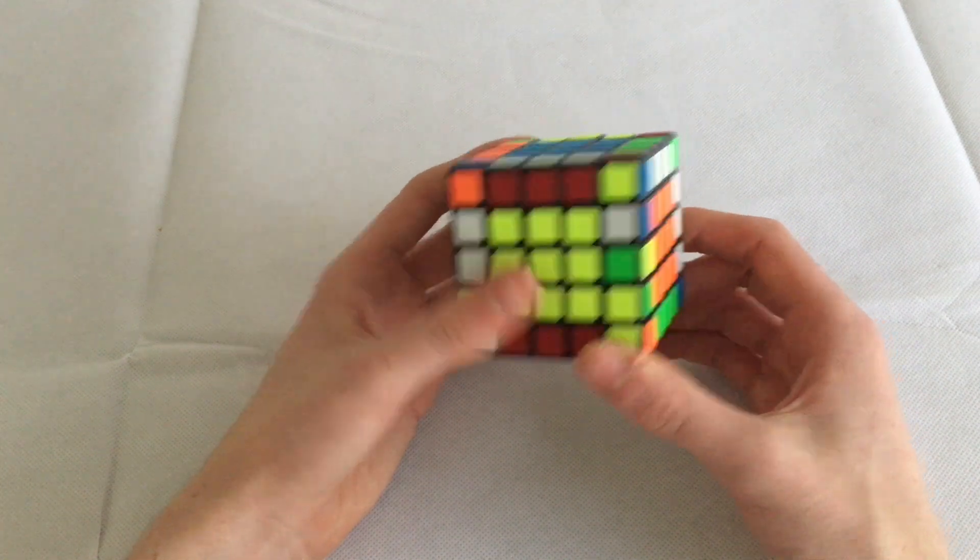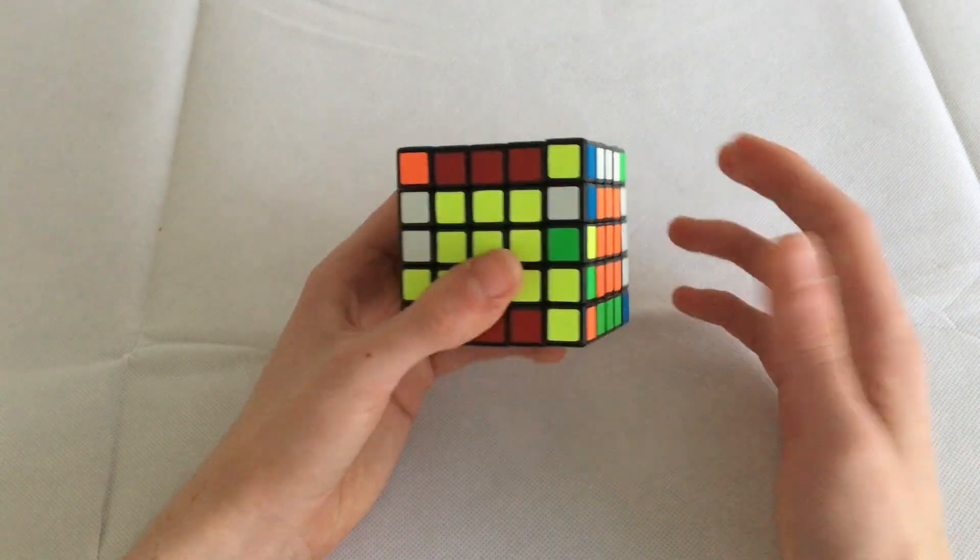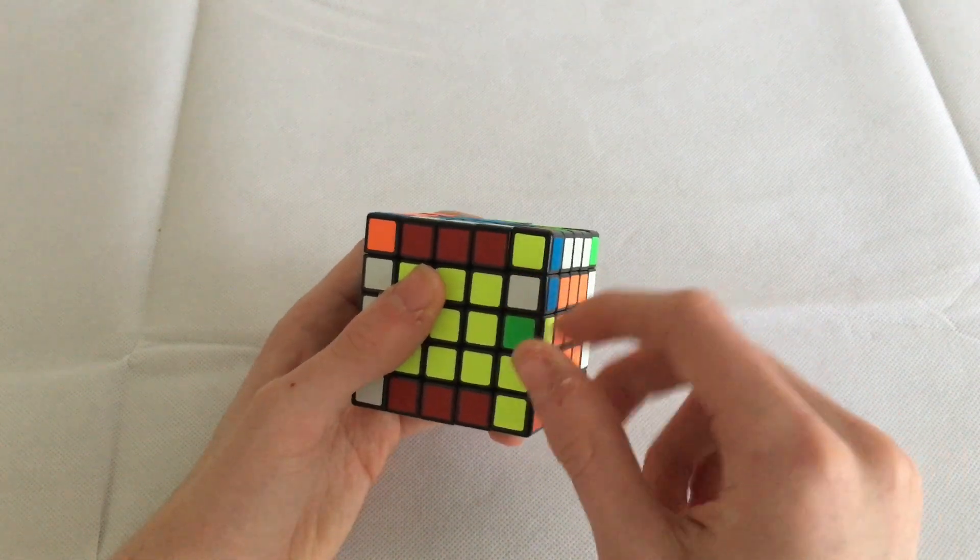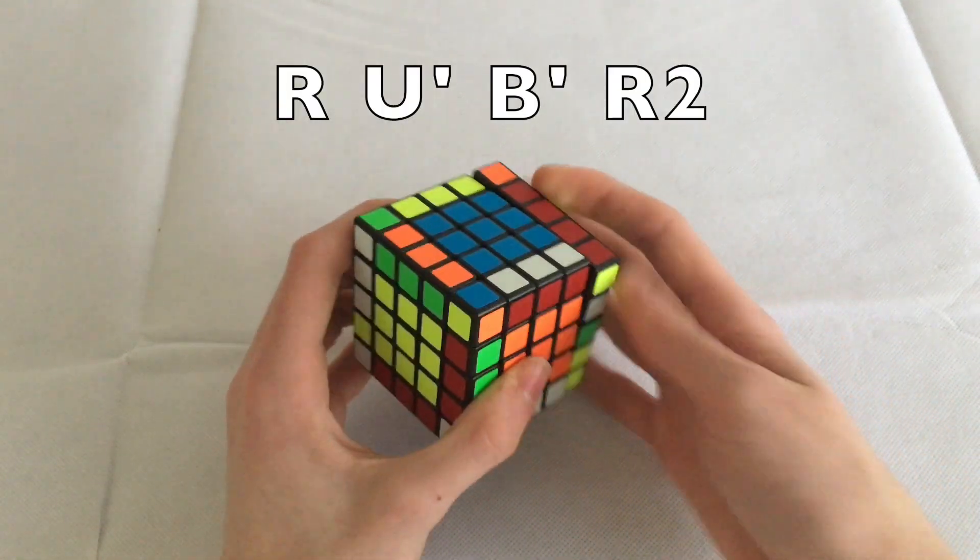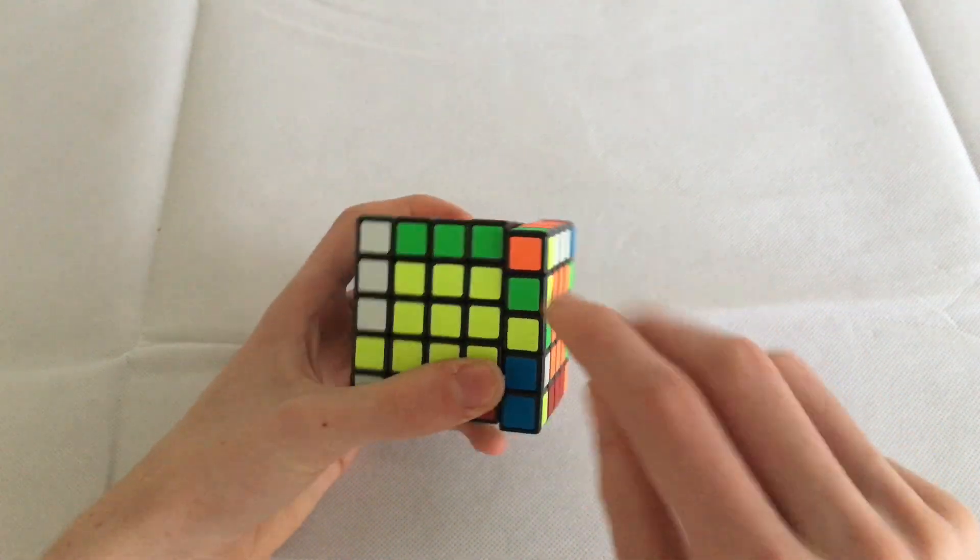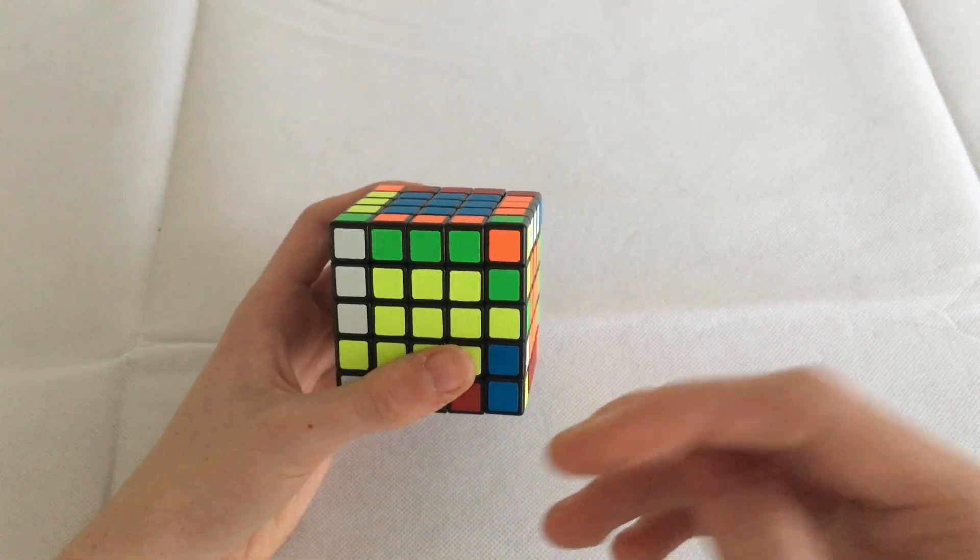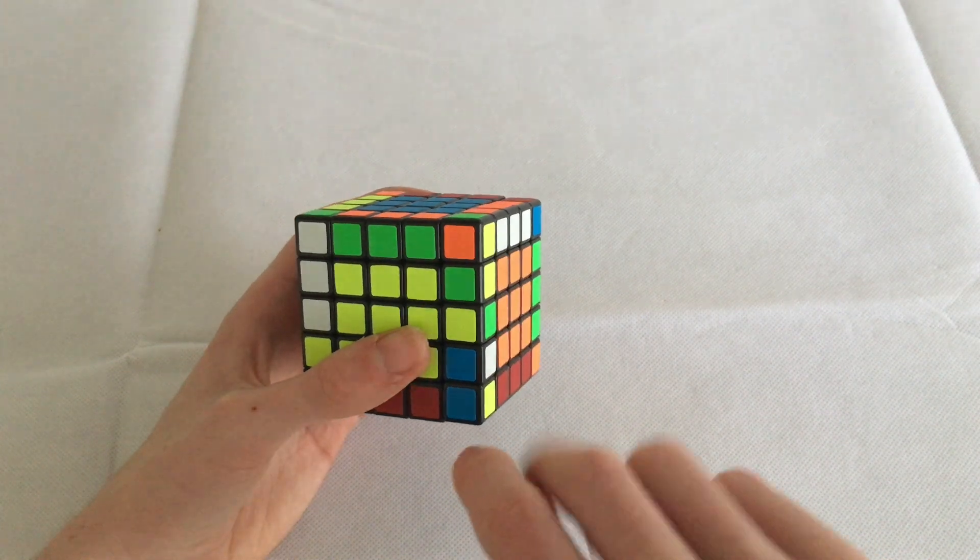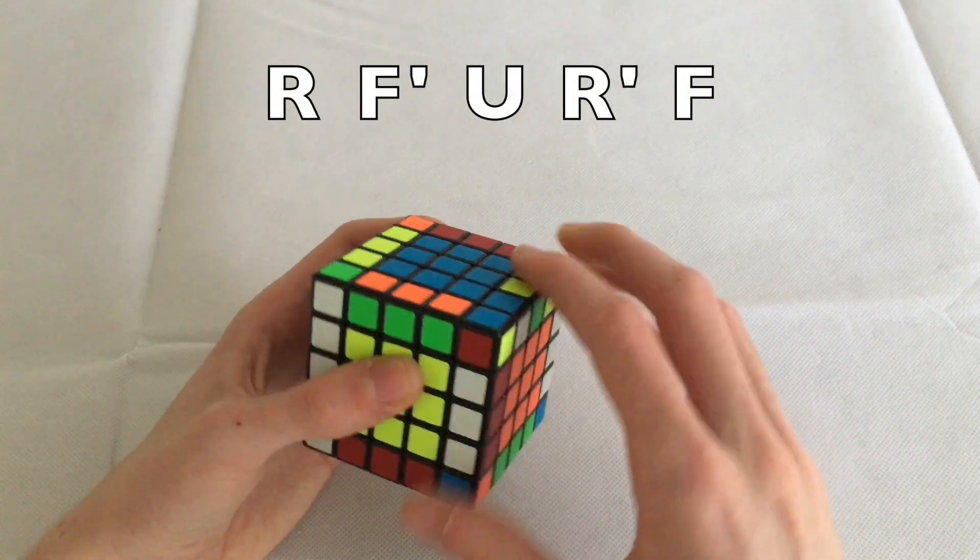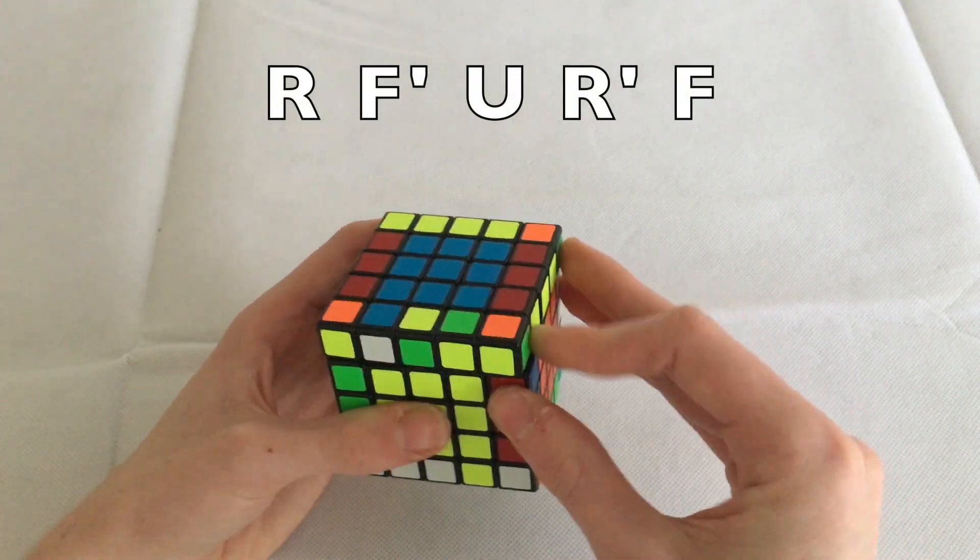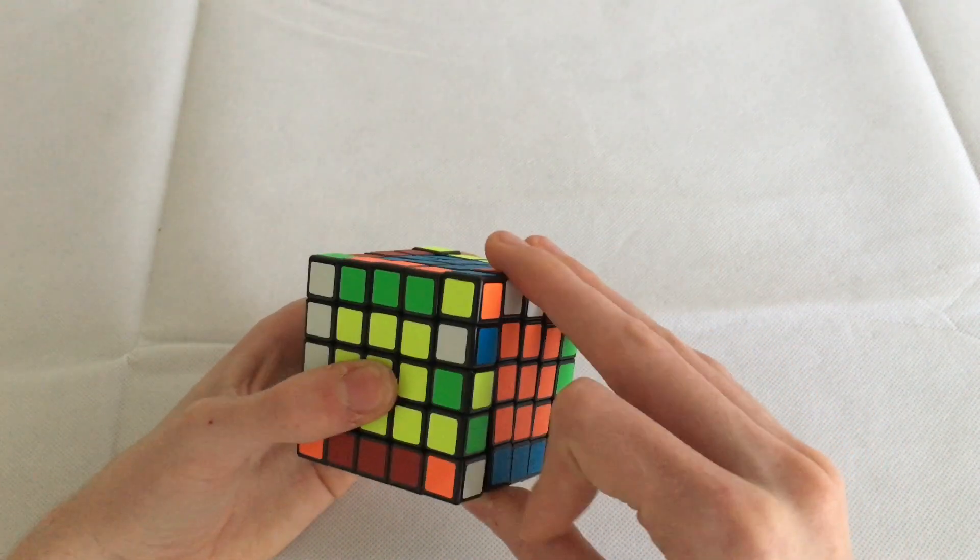If you saw some other tutorial, I'll show you all the algorithms that I use particularly for five by five real quick. So the one that I will use for swapping the edges to flip this pair is R U' B' R2, and that'll flip this edge pair. And then if I needed to, after I do my slice move, the algorithm for that would be R F' U R' F.